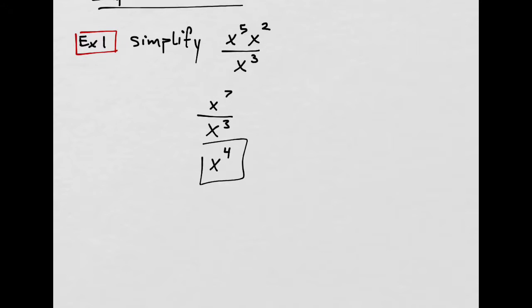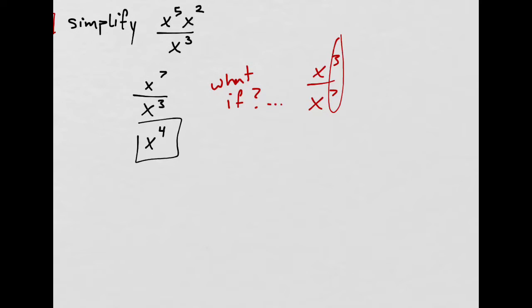Now what if we had x to the 3 over x to the 7th? Well, I would still do 7 minus 3, and that's still 4.